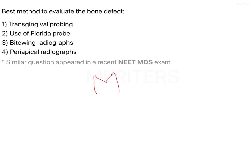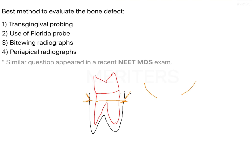For example, if this is my tooth, this is the root, this is the CEJ, and this is the alveolar bone — when there is loss of bone on both sides, that is horizontal bone loss. In many situations, there will be bone loss such that the tooth appears exposed. However, all of this is only visible under the radiograph.